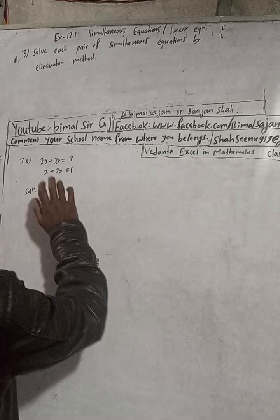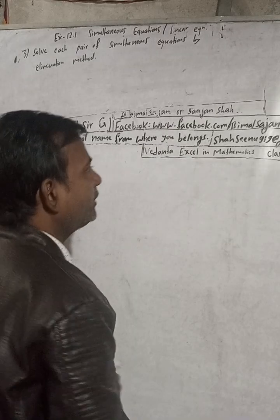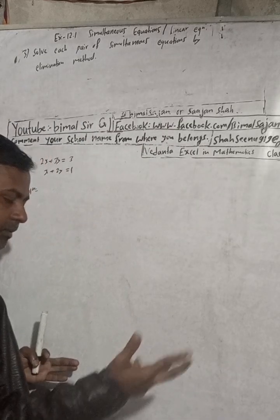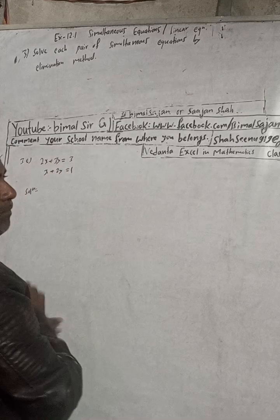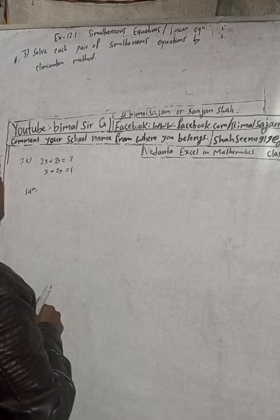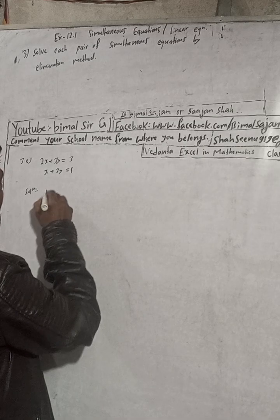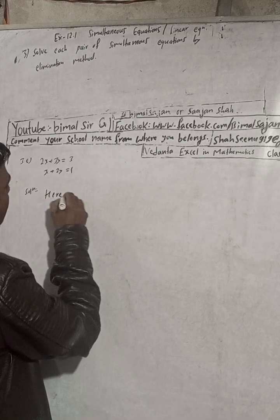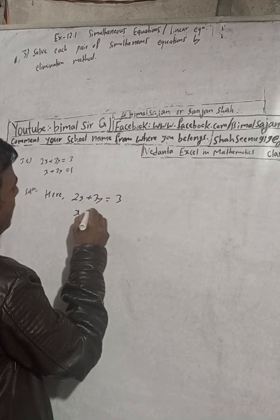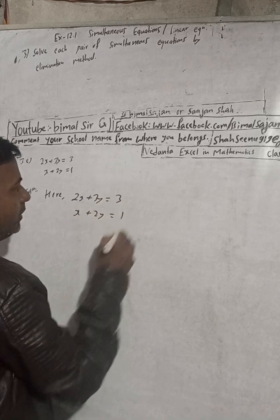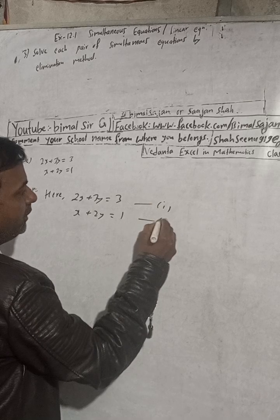We have to solve by elimination method. What do you mean by elimination method? Elimination means you can either eliminate x or y by addition or subtraction. So to solve that, I write first here: 2x plus 3y equals 3, x plus 2y equals 1. This is equation 1 and this is equation 2.